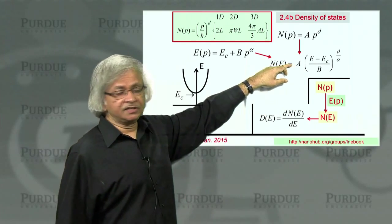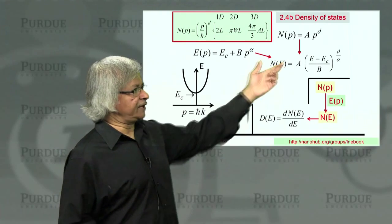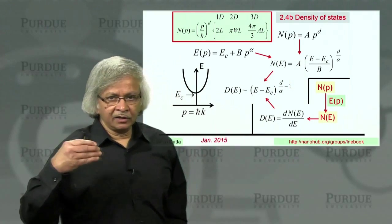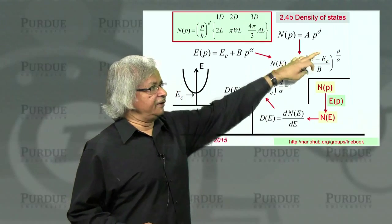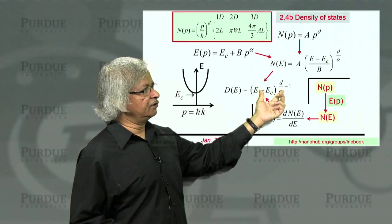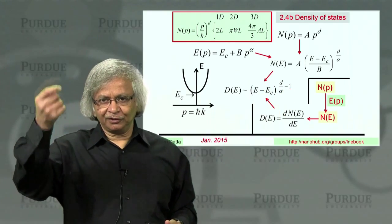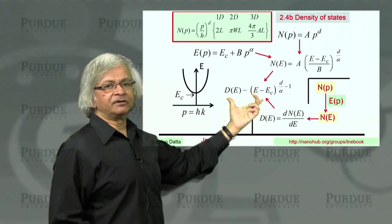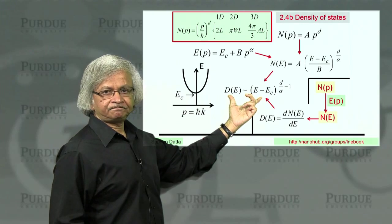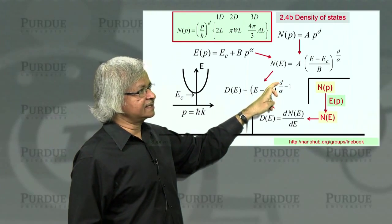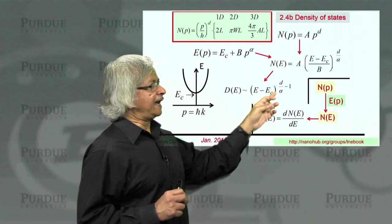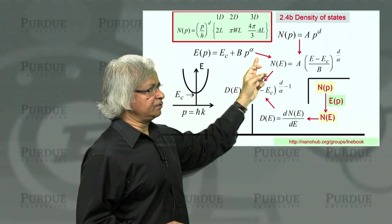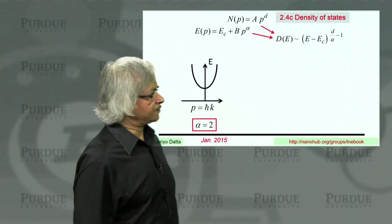Now we are done. We want the density of states, so you just take the derivative of that. When you take the derivative of something to the power d over alpha, what you'd get is this quantity to the power d over alpha minus 1. That is, whenever you take derivative, it subtracts 1 from the exponent. So that's the general expression for the density of states. Note that it depends on d, the number of dimensions, and alpha, which tells you how energy varies with momentum.